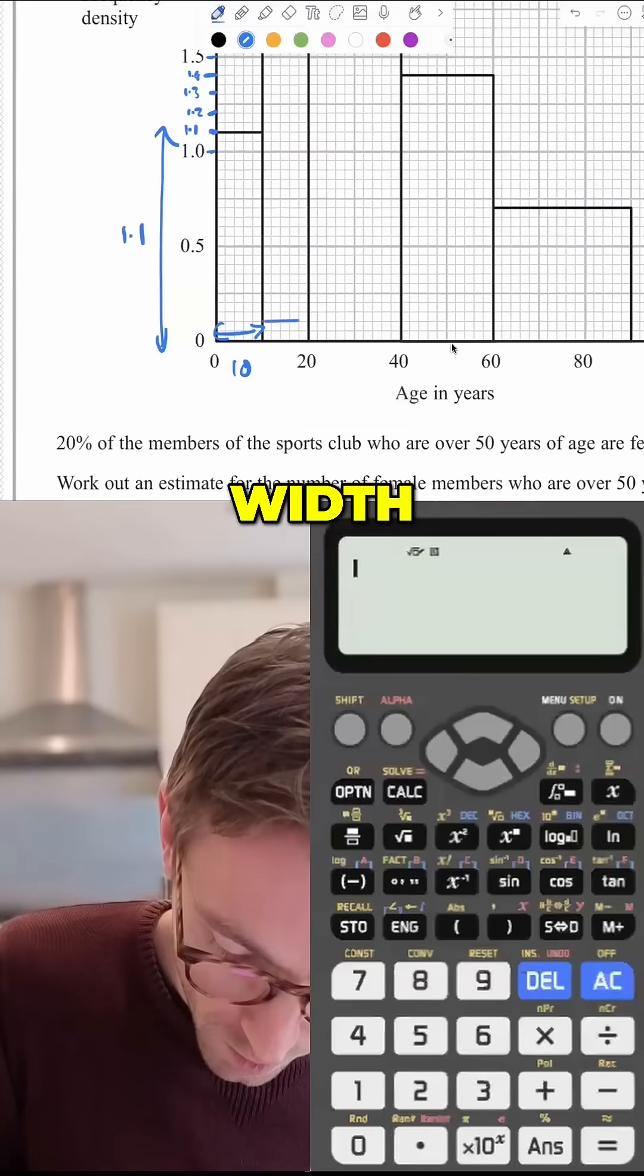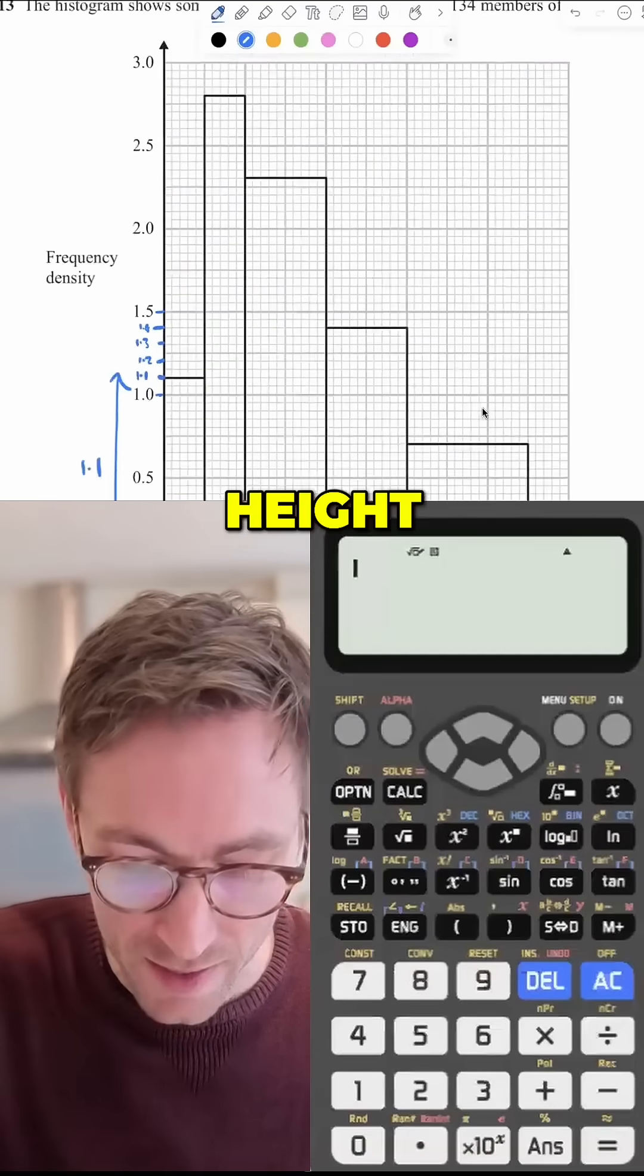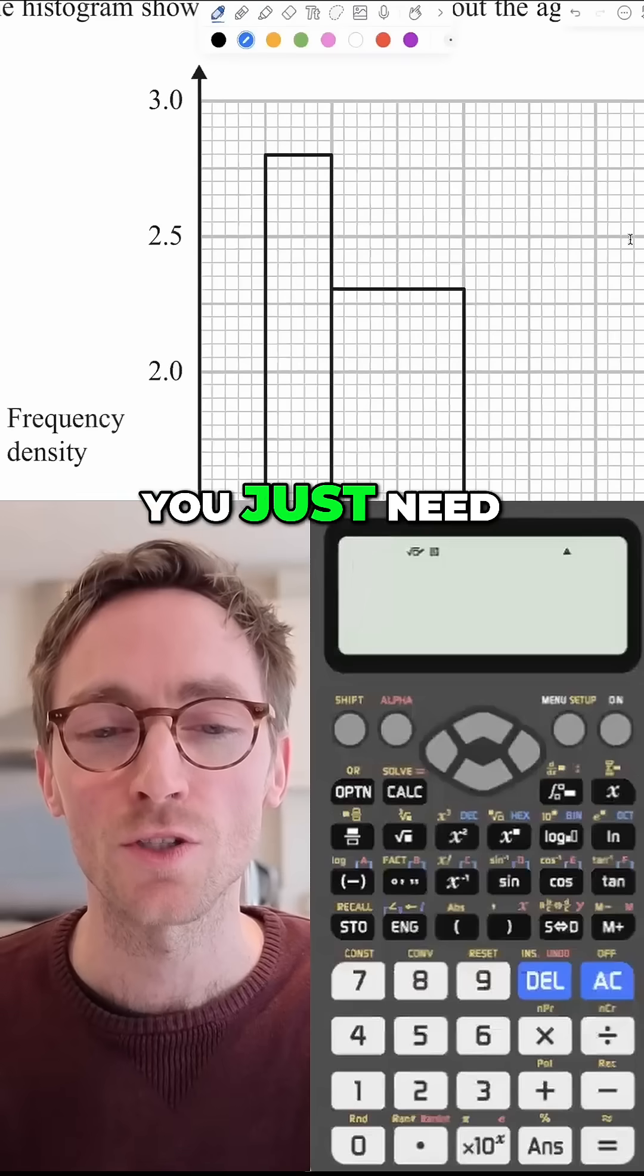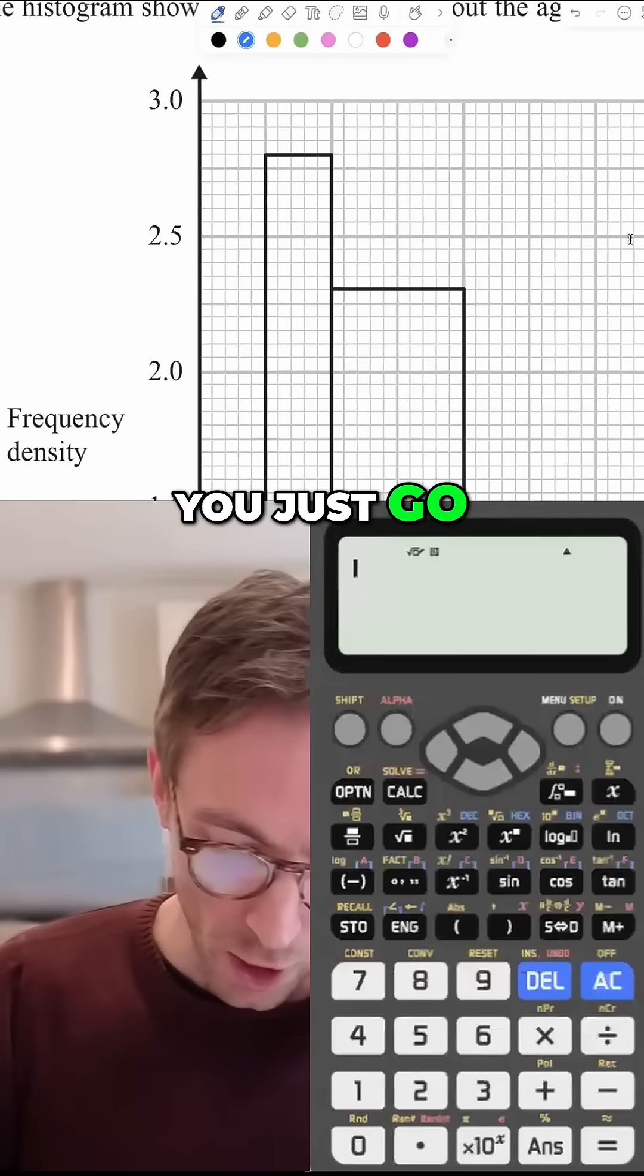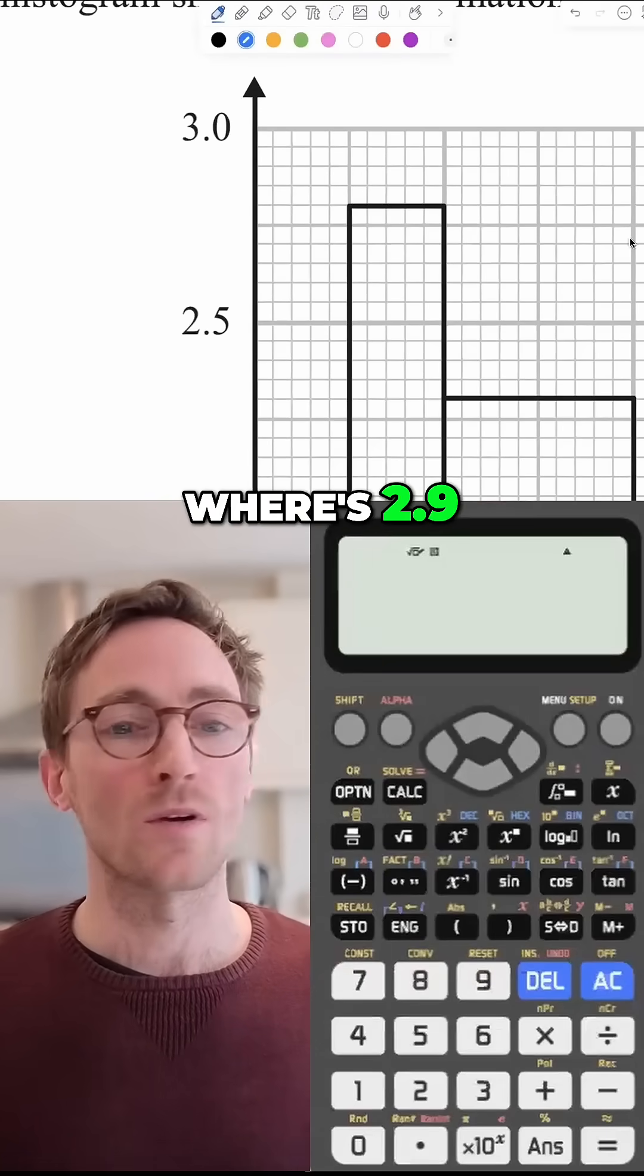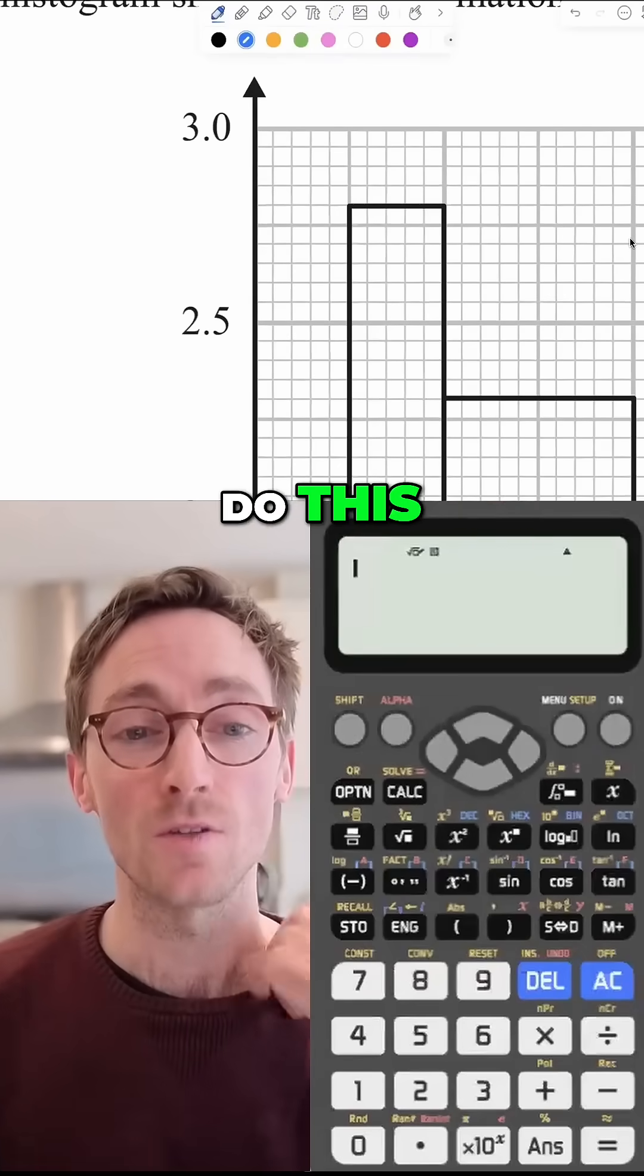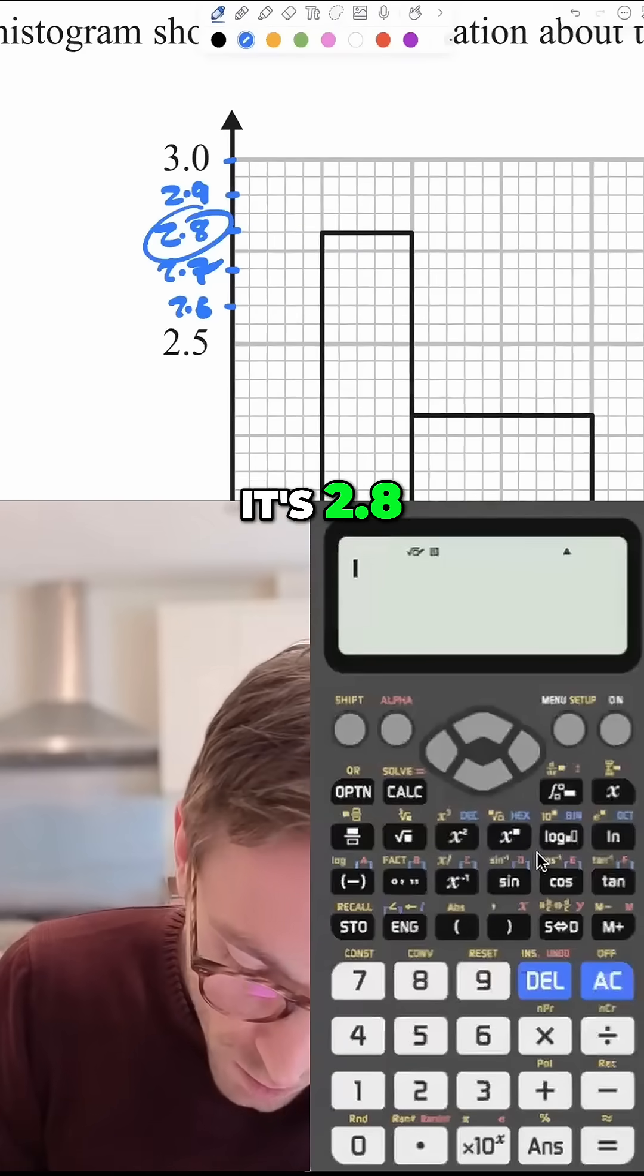What is the width of the second box? Everyone's got that as 10. What's the height? Stick it in the chat. If you're getting this wrong, you just need to slow down. You just go, right, where's 2.6? Where's 2.7? 2.8? 2.9? Where's 3? Just go and mark it out. I would actually really recommend you do this. Now you just read it off. Oh, it's 2.8. There you go.